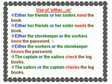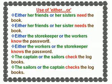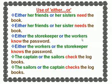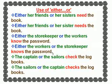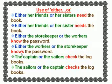'Either the storekeeper or the workers know the password' — the first subject is singular, the second subject is plural. The verb agrees with the second subject, which is plural: 'workers know.' 'Either the workers or the storekeeper knows the password' — notice now the verb 'knows' agrees with the singular subject 'storekeeper.'